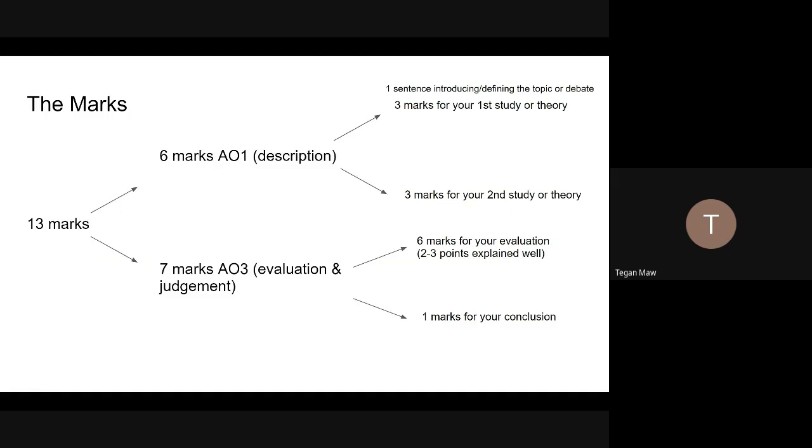Six marks are for AO1, your description. You should do a sentence introducing or defining the topic or debate. Then three marks for your first study or theory, so three things about it, and then three marks for your second study or theory.